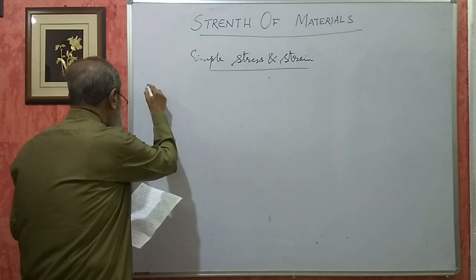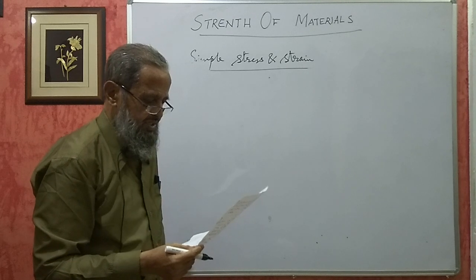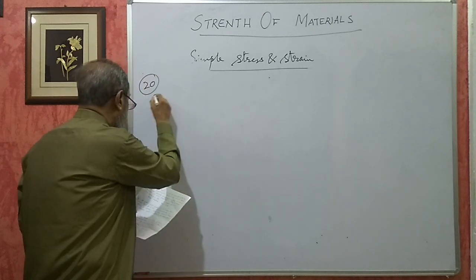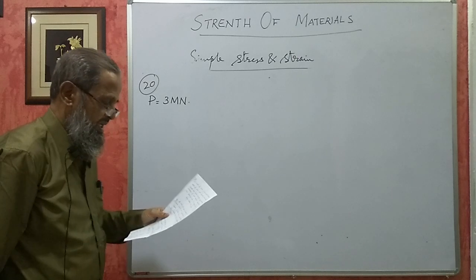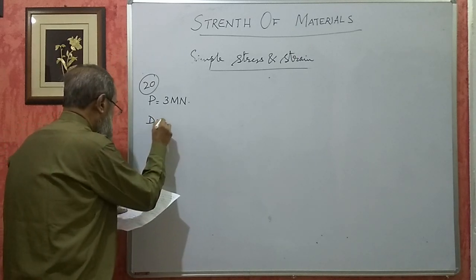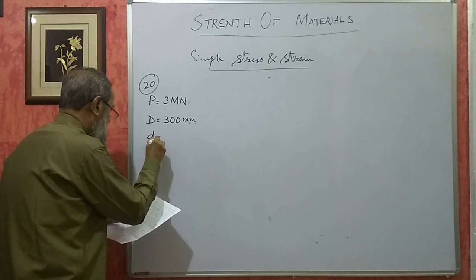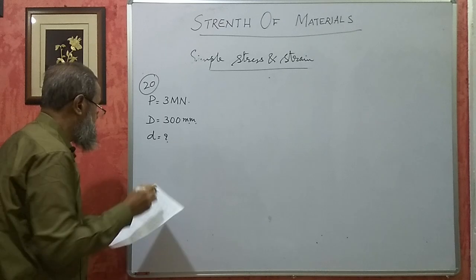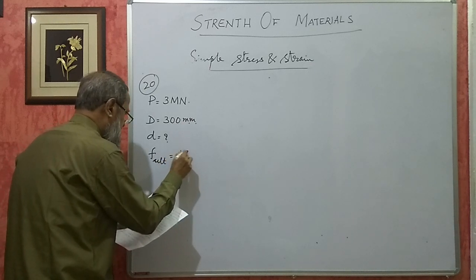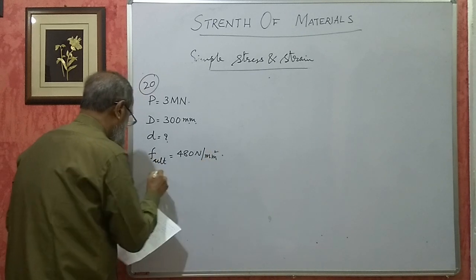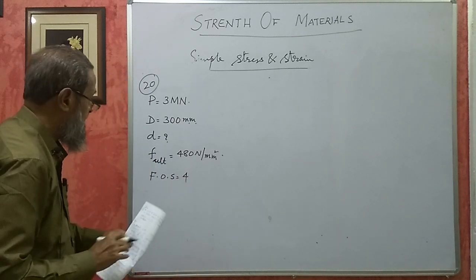I am taking problem number 20 from the question bank. A hollow steel column has to carry an axial load of 3 mega newton. The external diameter of the column is 300 millimeters. Find the internal diameter, if the ultimate stress of steel is 480 newton per mm square and the factor of safety is 4.